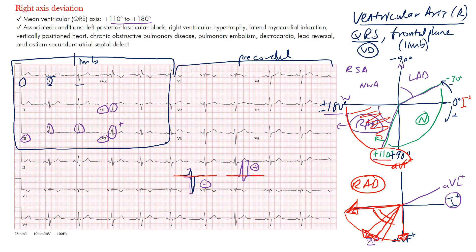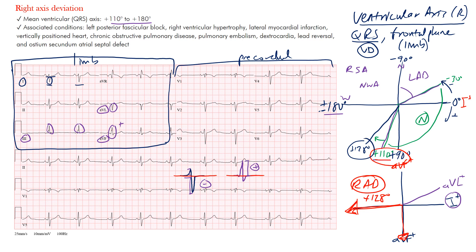The machine calculated positive 128 degrees for this EKG, which falls within the right axis deviation range. To simplify things when you're first learning, use a quadrant system: left axis deviation, normal axis, right axis deviation, and the northwest axis. Use leads 1 and AVF — if complexes are going towards those leads you'll see upright complexes. Look whether they're positive or negative and go from there.